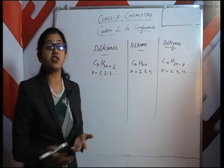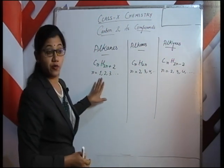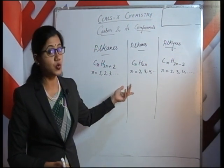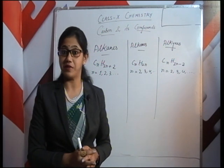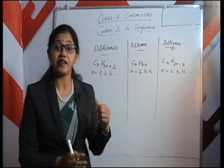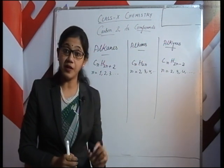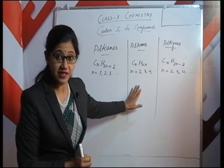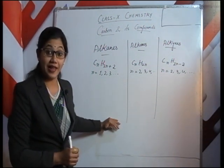A very common question: in case of alkanes, n starts with 1, but in case of alkenes and alkynes, n starts with 2 — why? Alkenes and alkynes are unsaturated hydrocarbons and they either contain a double bond or a triple bond. So in order to insert a double or a triple bond we need a minimum of 2 carbons.